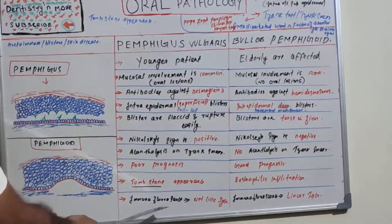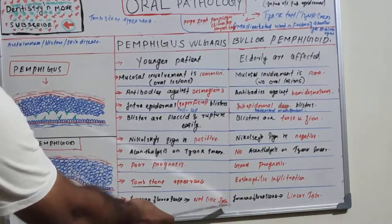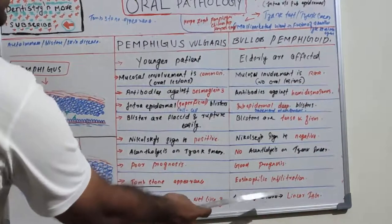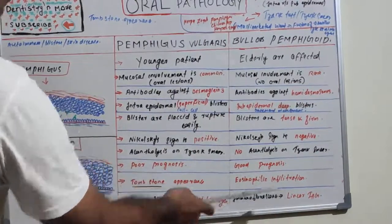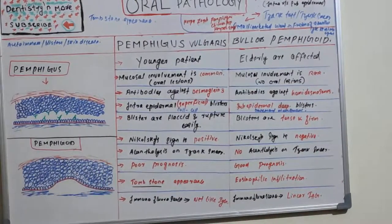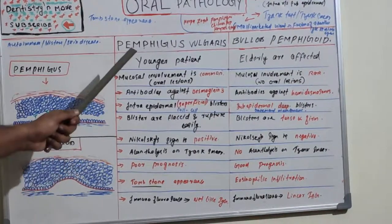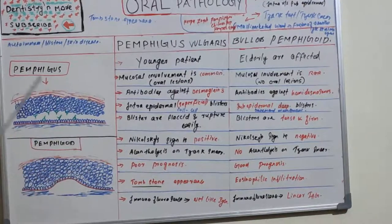Coming to immunofluorescence, in pemphigus vulgaris we have a net-like IgG pattern, whereas in bullous pemphigoid we have linear IgG structures along the basement membrane zone.